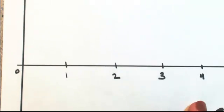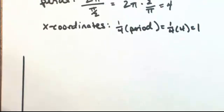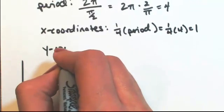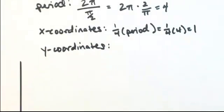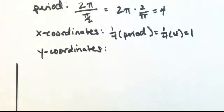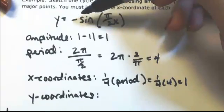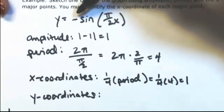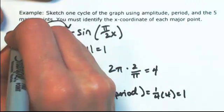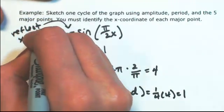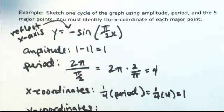As you can see, we're going by 1's. Now the y-coordinates follow the pattern of sine, but notice we have a negative in front, so this is a reflection over the x-axis. That negative will reverse our pattern.